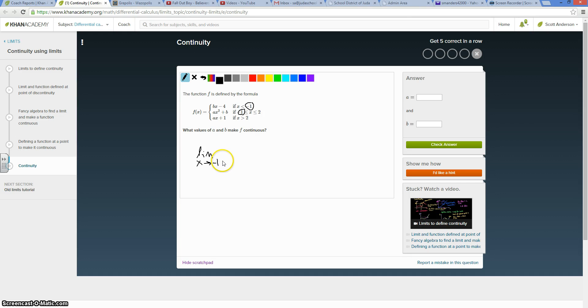So I know the limit as I come from the left hand side, which is here, bx minus 4, has to be equal to the limit on the right hand side for this to be continuous.